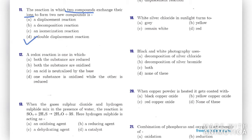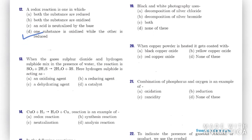Question twelve: a redox reaction is one in which — both substances are reduced, both are oxidized, acid is neutralized by base, or one substance is oxidized while the other is reduced? A redox reaction involves both processes: one substance is oxidized while the other is reduced.